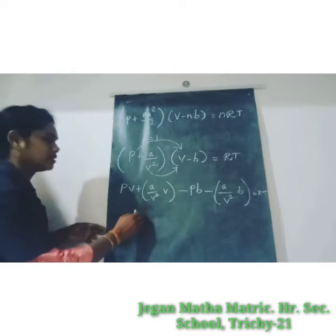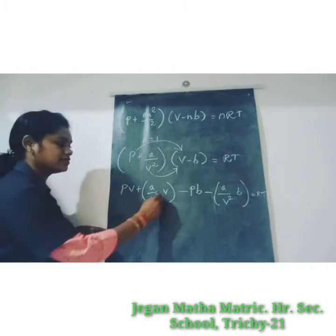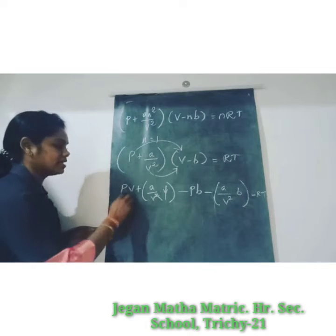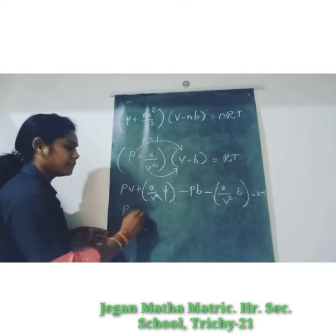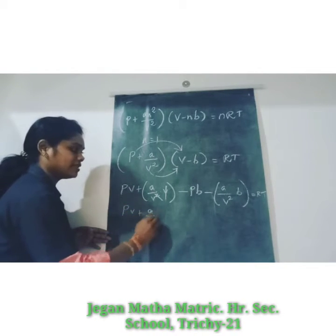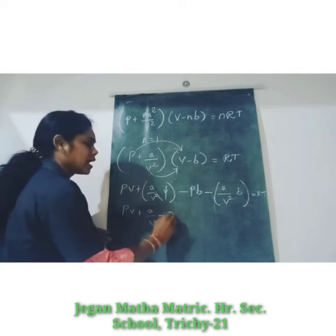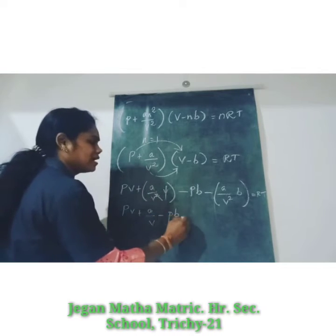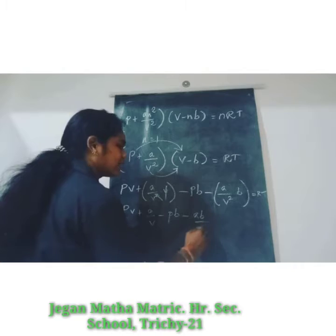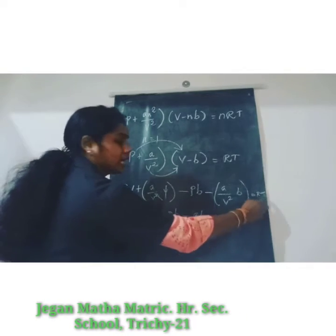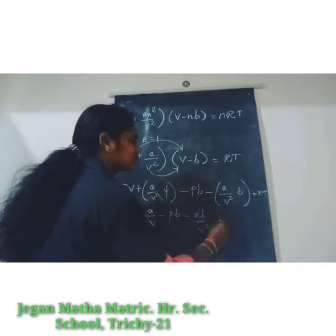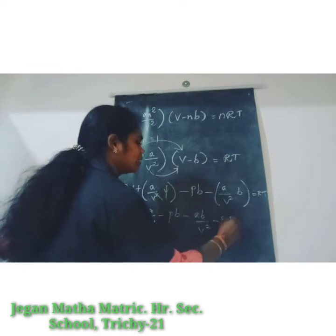Cancelling terms: V cancels, so we get PV plus A by V minus PB minus AB by V² equals RT. We take this as equation number 1.